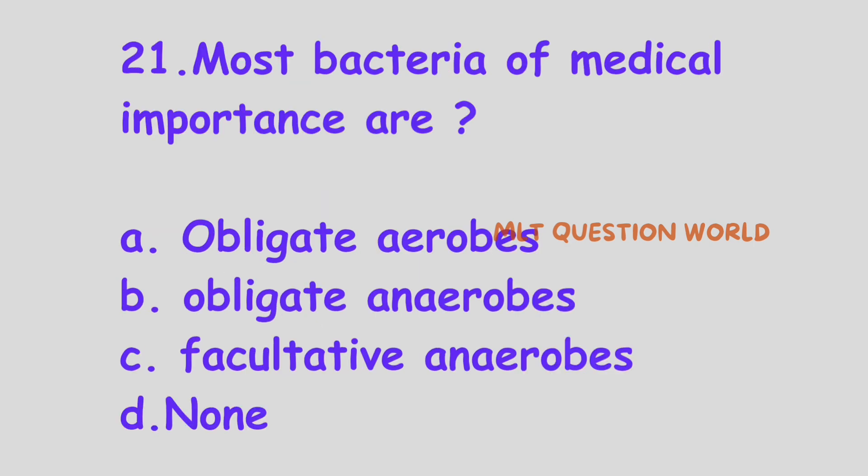Question number 21. Most bacteria of medical importance are: Option A, Obligate aerobes; Option B, Obligate anaerobes; Option C, Facultative anaerobes; Option D, None. Most bacteria of medical importance come under which of the following categories? The right answer is Option C, Facultative anaerobes. Most bacteria of medical importance are facultative anaerobes.